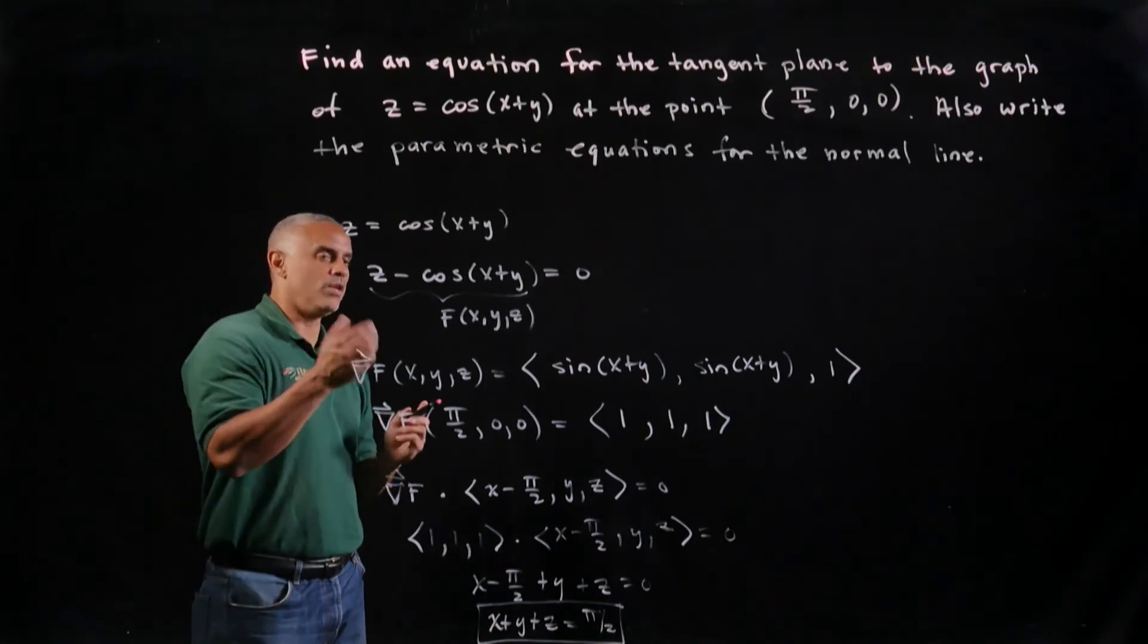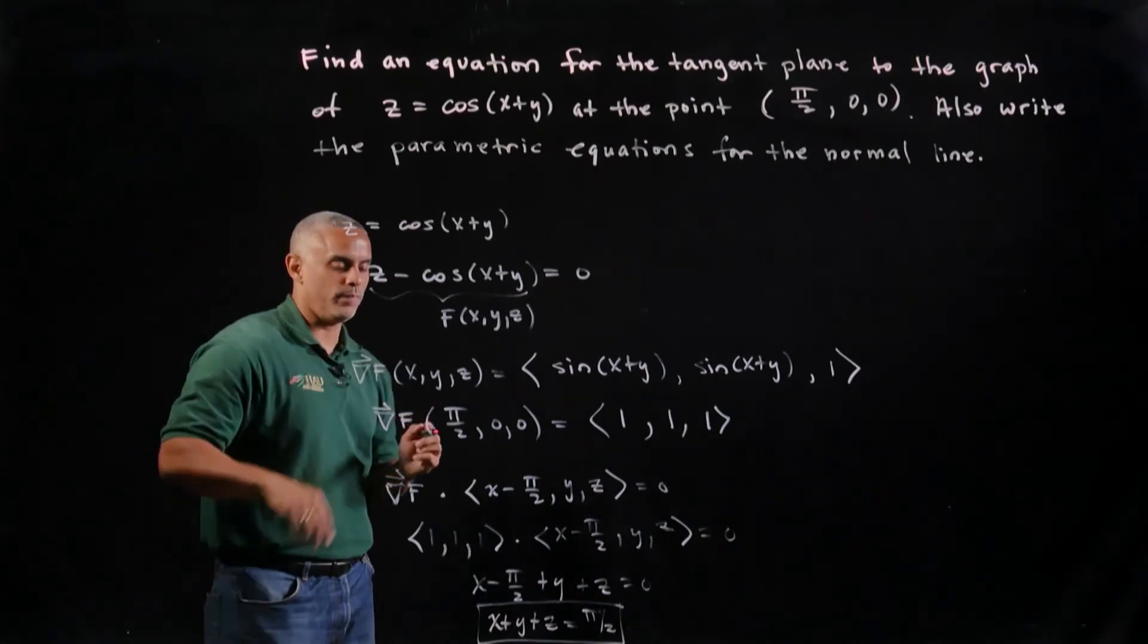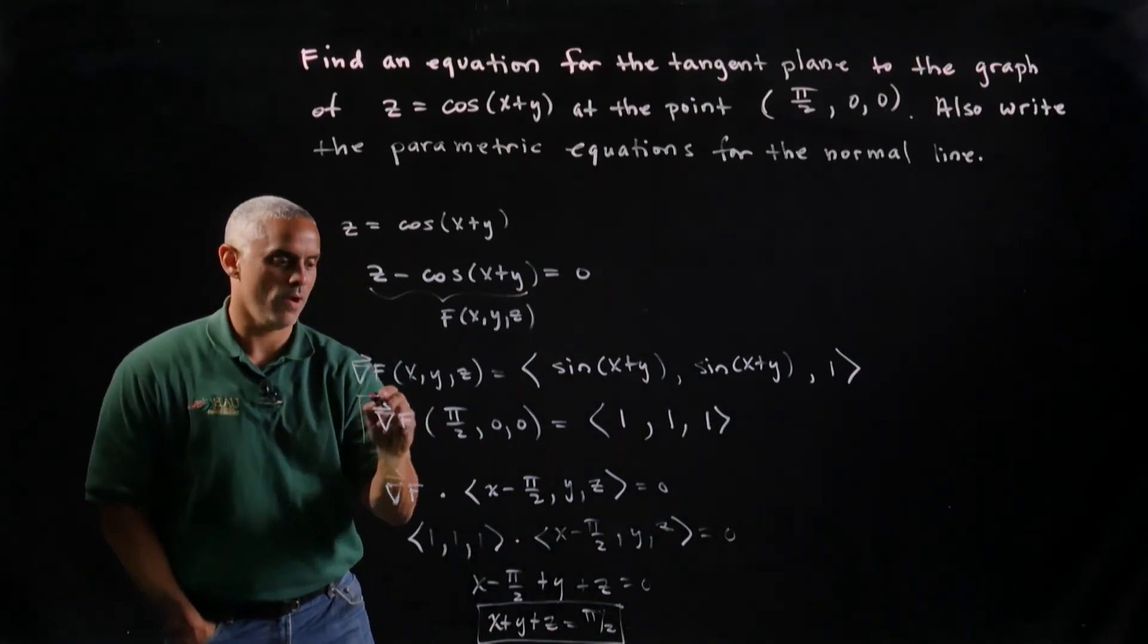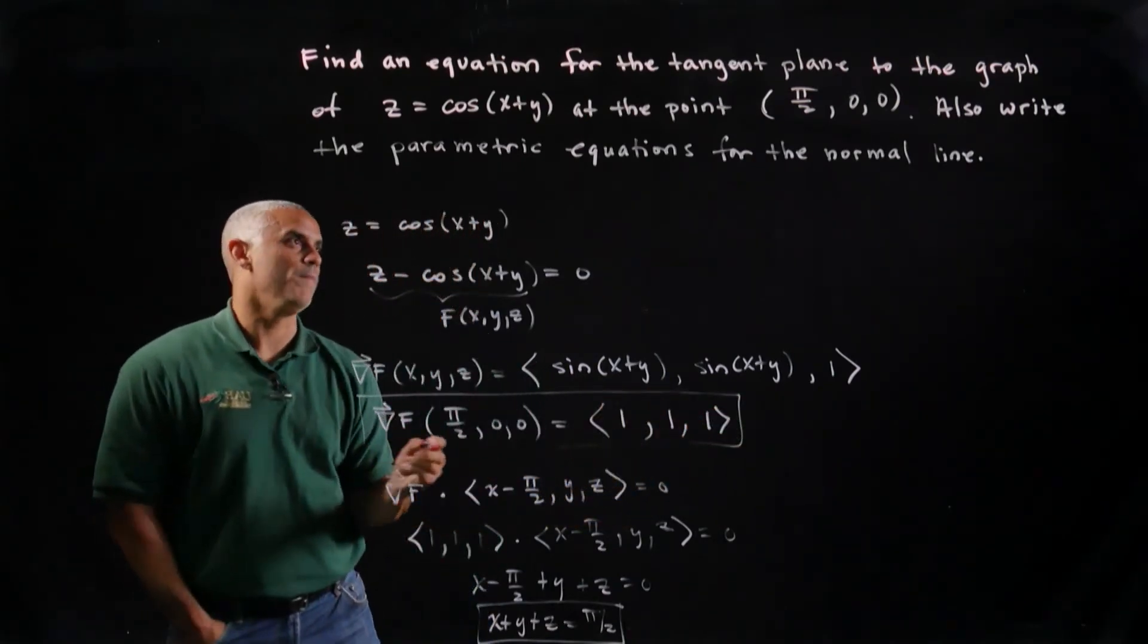And now to write the parametric equation of a normal line, I have all the information in my gradient and my point.